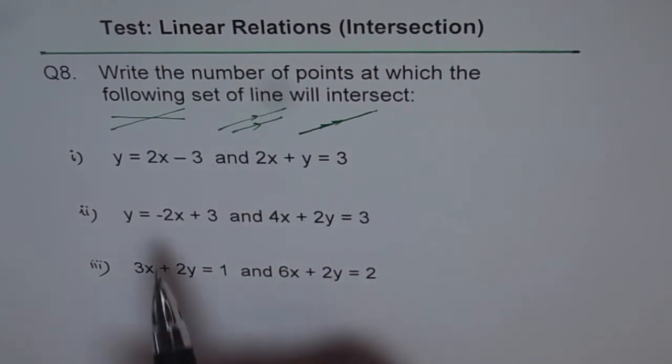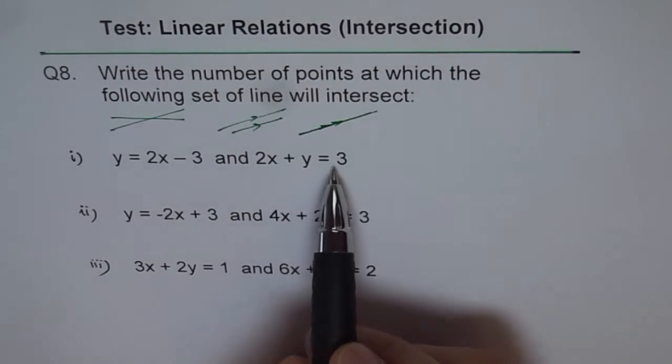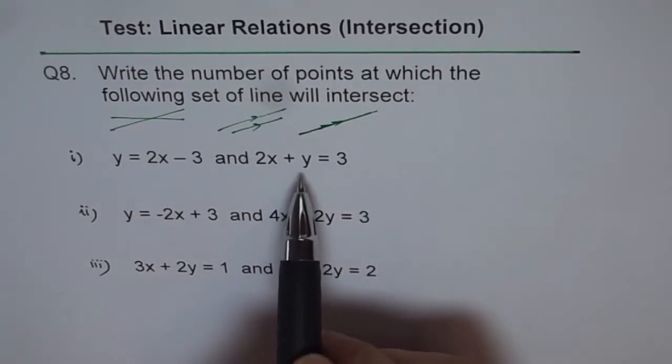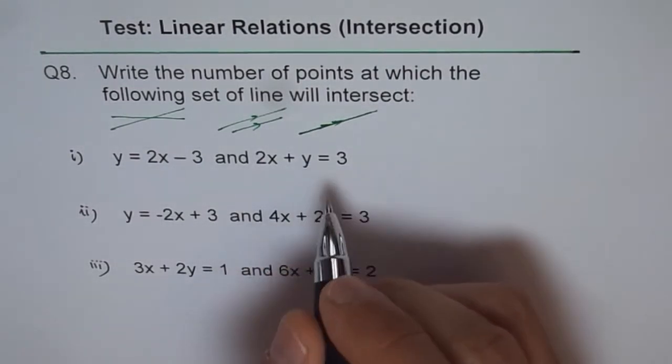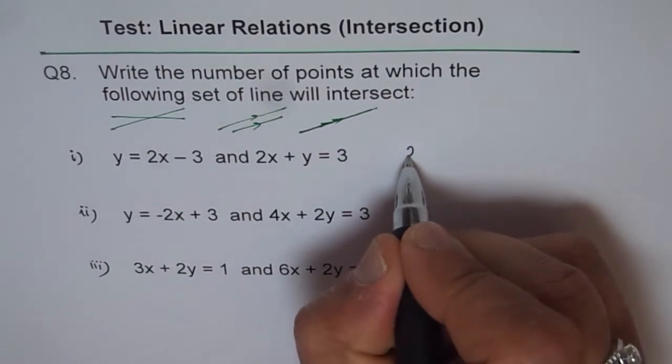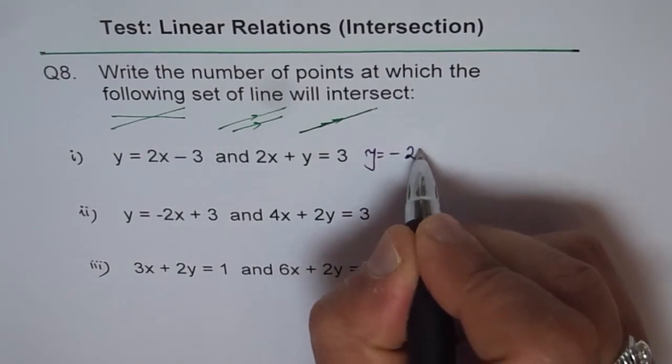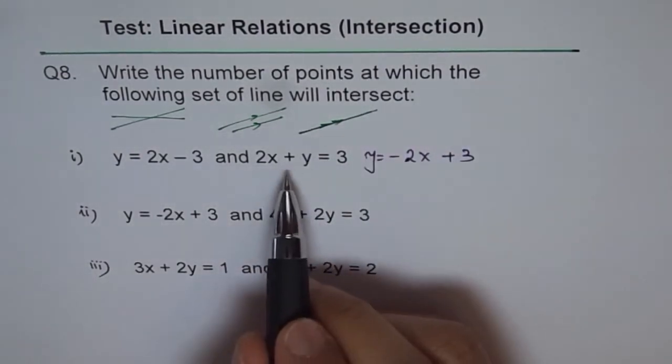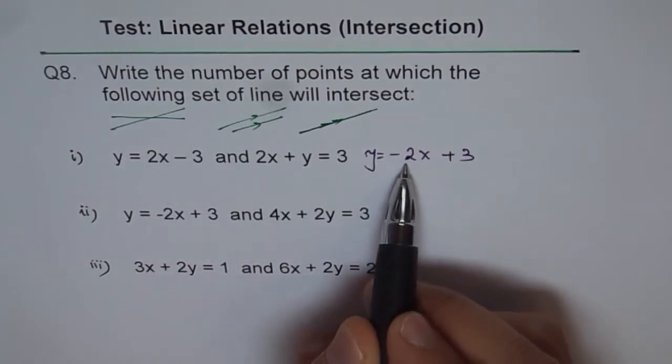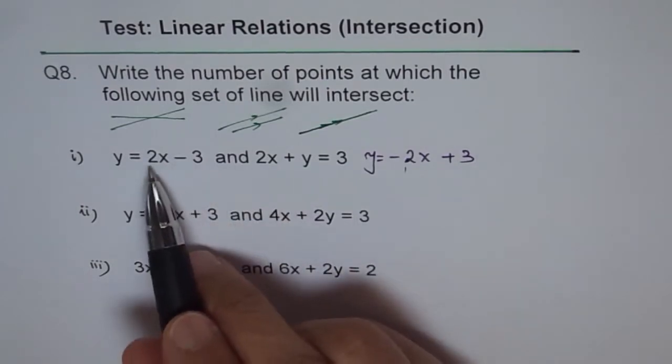The very first one is y equals 2x minus 3 and we have 2x plus y equals 3. Better to write this line in the form of slope intercept. So we can isolate y. We will take 2x on the other side and say y equals minus 2x plus 3. So as soon as I write this equation in this form, I know that the slope is minus 2 for this line and the slope is plus 2 for this line.